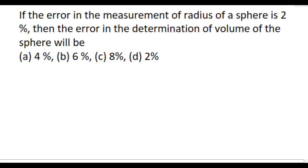If the error in the measurement of radius of a sphere is 2 percent, then the error in the determination of volume of the sphere will be. In this question, the error in the measurement of radius is given, we have to find the error in the measurement of volume.